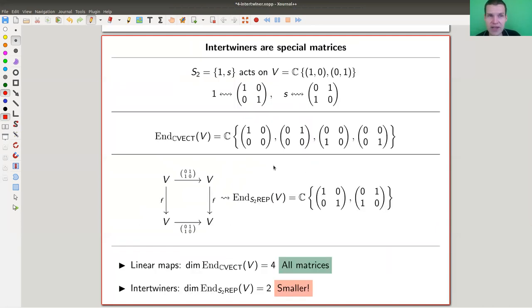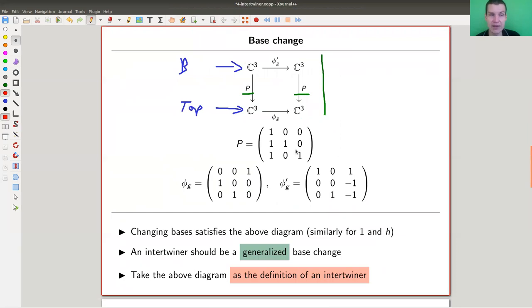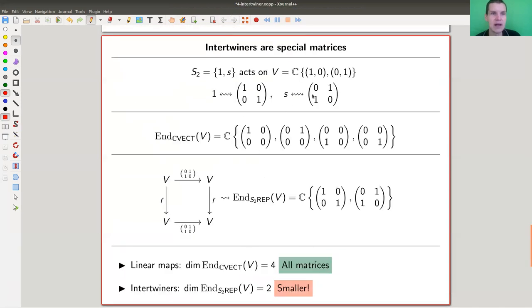Okay, and then just to be sure here, intertwiners are matrices, but they are just special matrices. So here the intertwiner was a matrix, and it's always a matrix, because we're thinking about finite dimensional vector spaces and finite groups anyway. And yeah, so S2 acts on this vector space, and now just the symmetric group, just by permutation. So the identity fixes everything, and the other one permutes the two basis vectors. And just the endomorphisms of this vector space, because this is just C^2, they're just all two by two matrices, and they're spanned by the four standard matrices, of course.